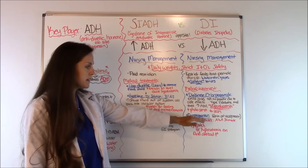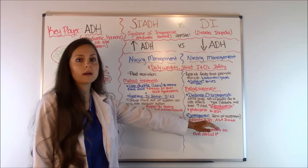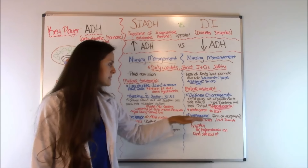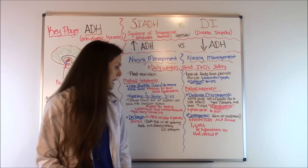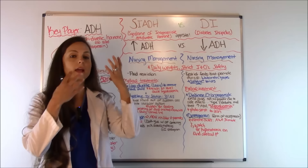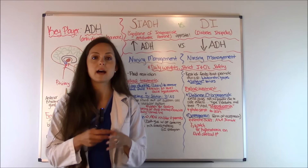Another treatment is desmopressin — also called Stimate — which is a synthetic form of vasopressin, essentially an anti-diuretic hormone replacement. The patient can take it by mouth, IV, or through the nasal passages. It's typically used in more extreme cases. As the nurse, watch for signs of hyponatremia, because desmopressin causes the patient to conserve water — just like natural ADH does — and that retained water can dilute the sodium levels, putting the patient at risk for water intoxication.